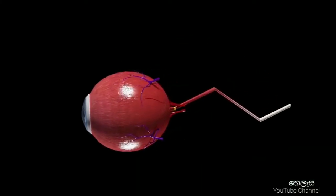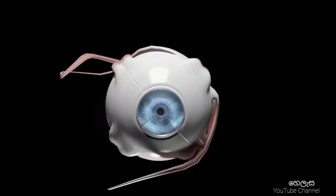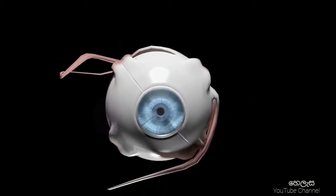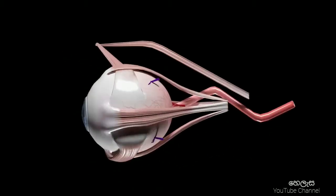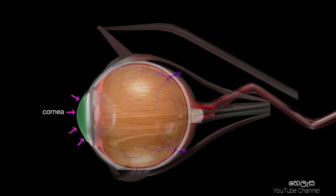To really understand floaters, here's a quick anatomy lesson of the eye. At the front you have the cornea — it's the protective layer for the lens and it works just like a window. You can see through it but you're protected from the outside. Behind the cornea is the lens, and the lens focuses the incoming light so you can see a sharp image.